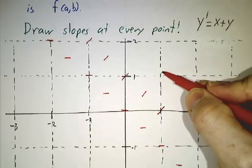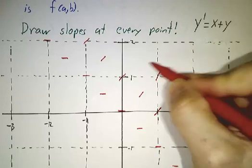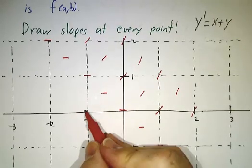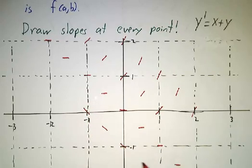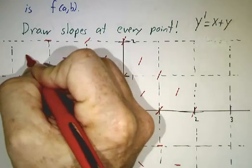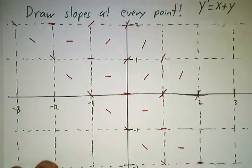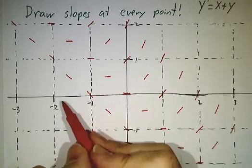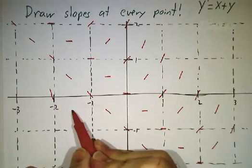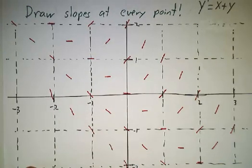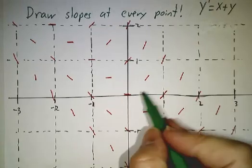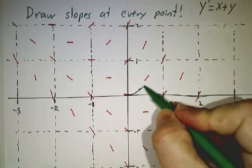If you go through a point where x plus y equals two, it has slope two. If you go through a point where x plus y equals negative one, it has slope negative one. Continuing this way, if it goes through a point where x plus y gives some value, it's going to have that slope. And you can get a whole picture of what the solutions look like.